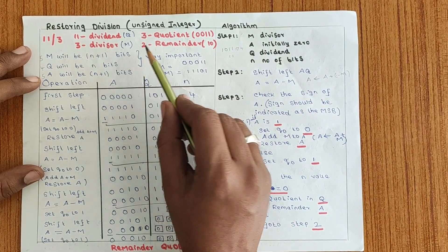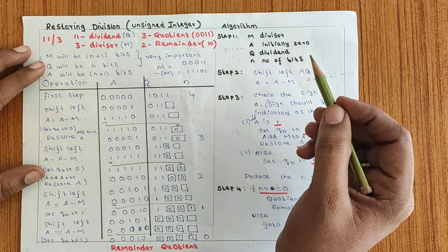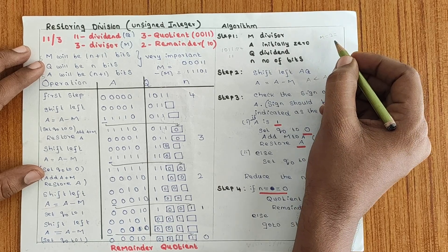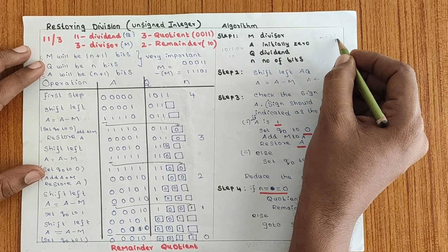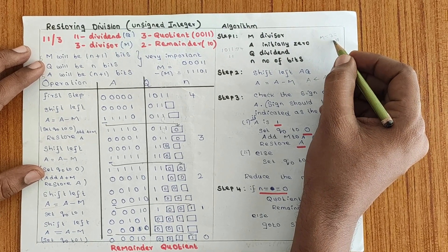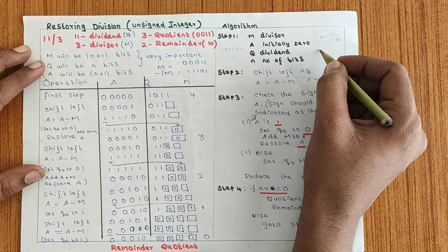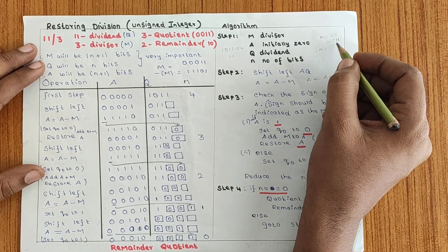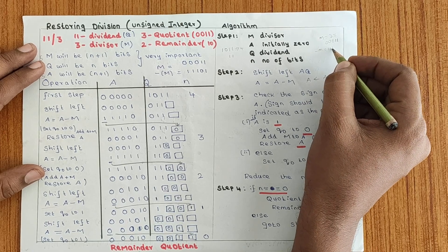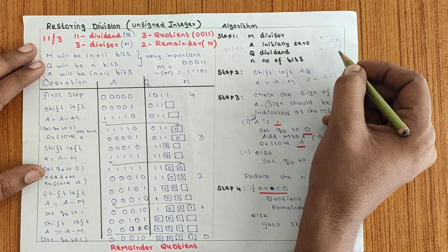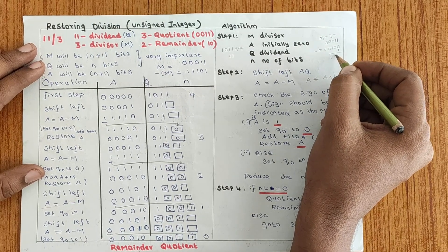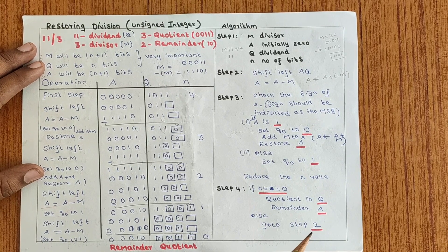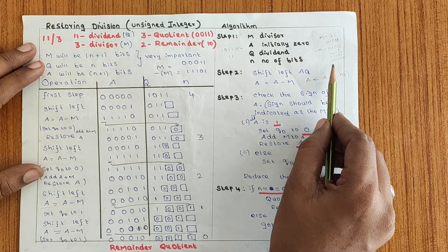In this example, M is 3, represented in N+1 = 5 bits. So M = 00011. For −M, we convert all 0s to 1s and 1s to 0s, then add 1 to the LSB, giving −M = 11101. M equals 3, so obviously −M equals −3, represented as 11101.